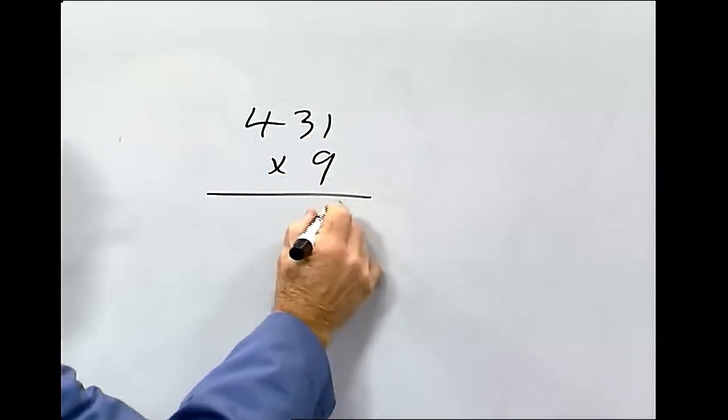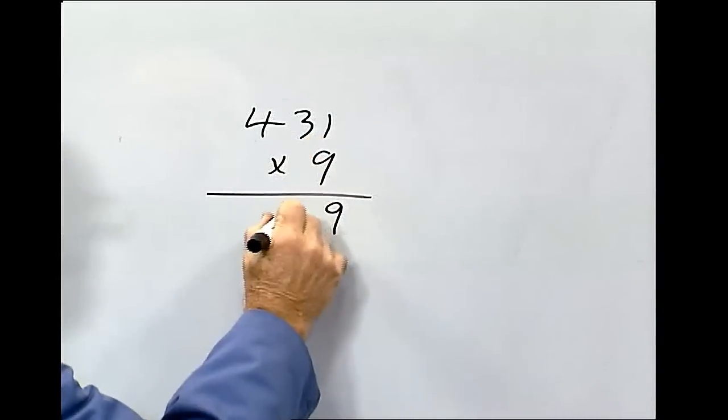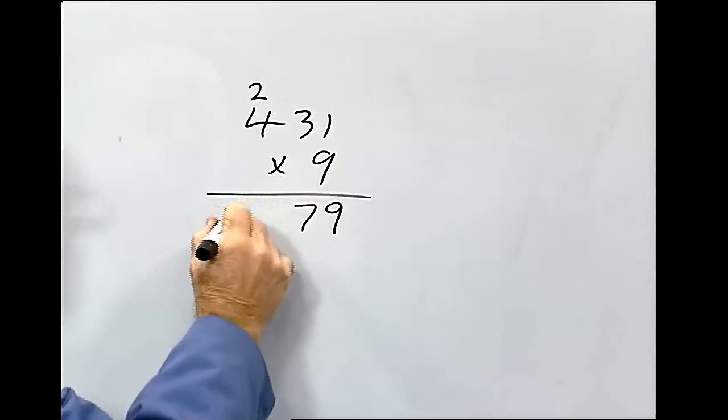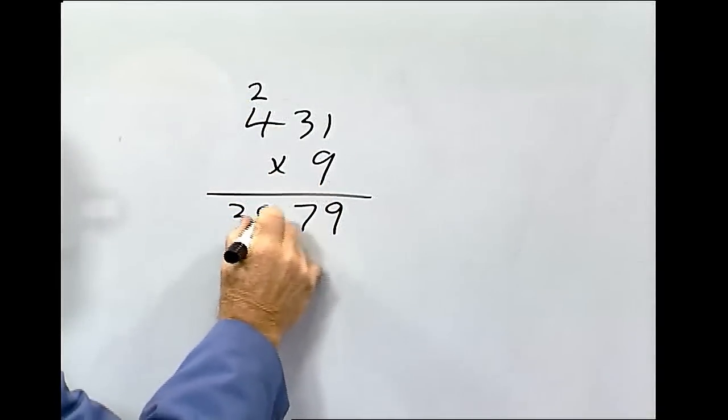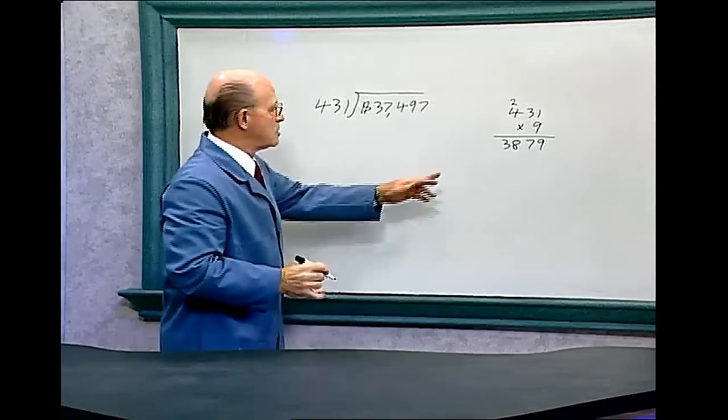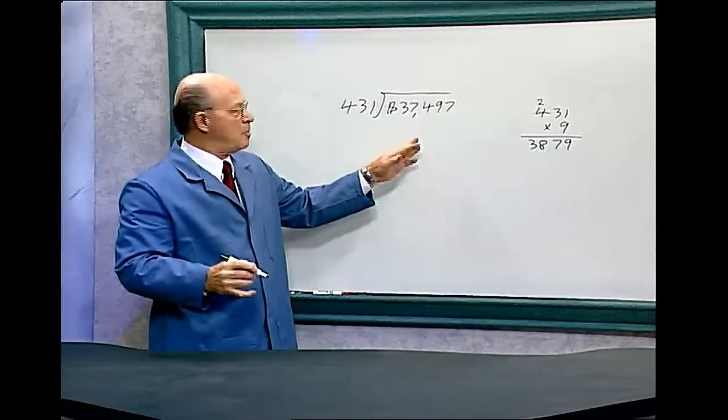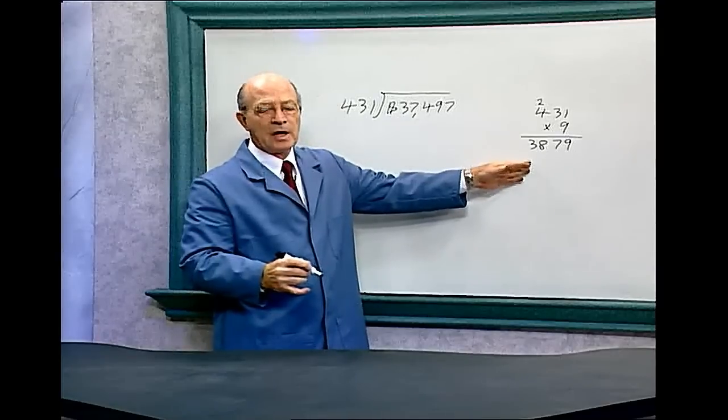So 9 times 1 is 9, 9 times 3 is 27, 9 times 4 is 36, plus 2 is 38. So it's 3,879, but we see that number's too large. And we can never have a larger number. It has to be smaller.